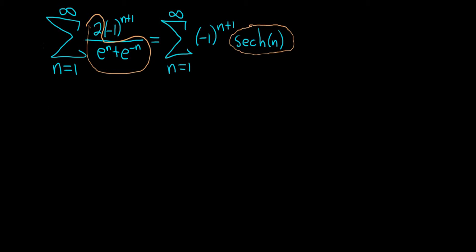So to do this, we're going to use something called the alternating series test. When you're using the alternating series test, you first have to identify your a sub n. So a sub n is the non-alternating part.